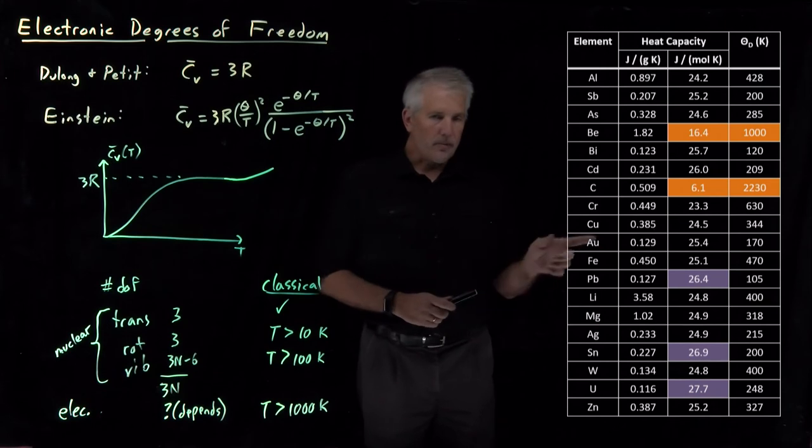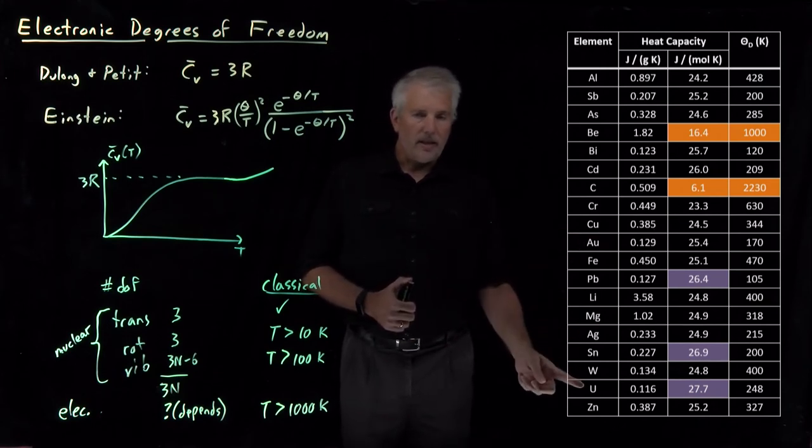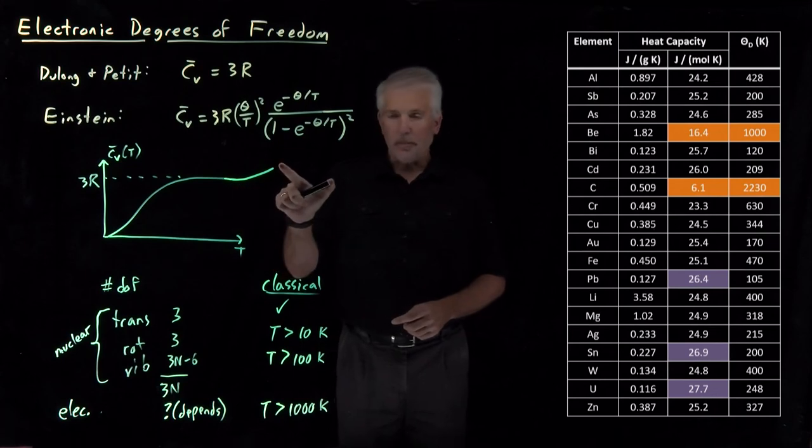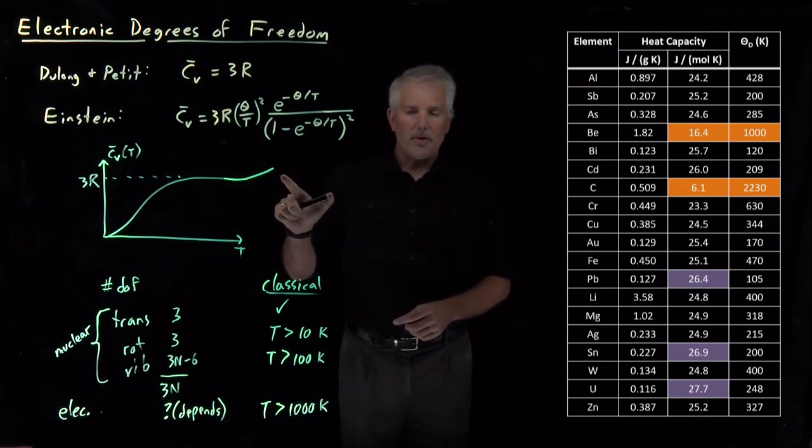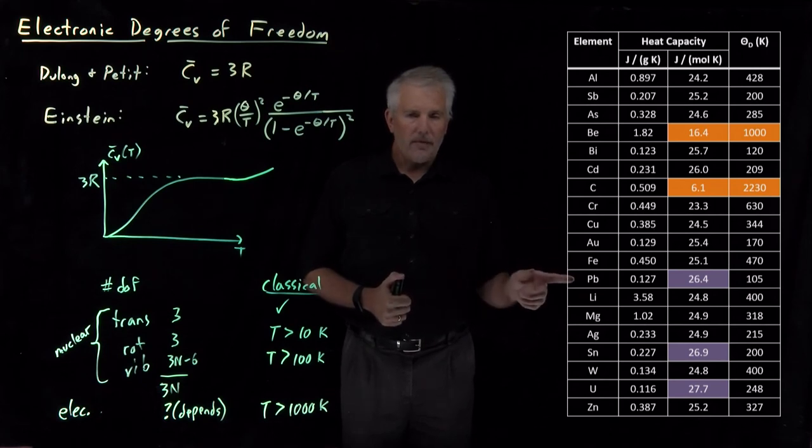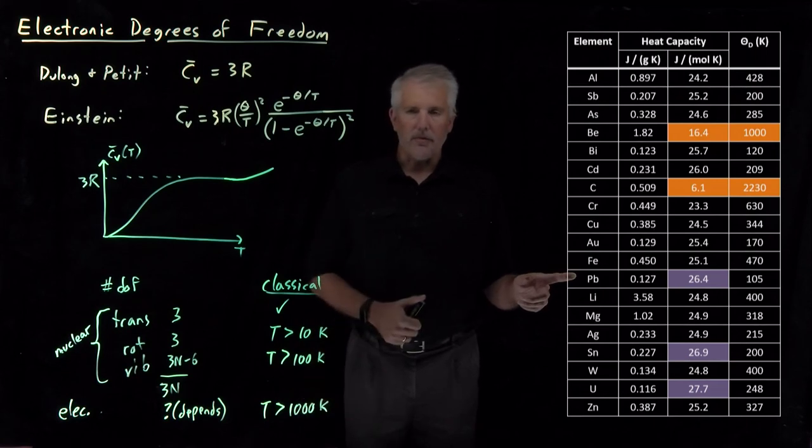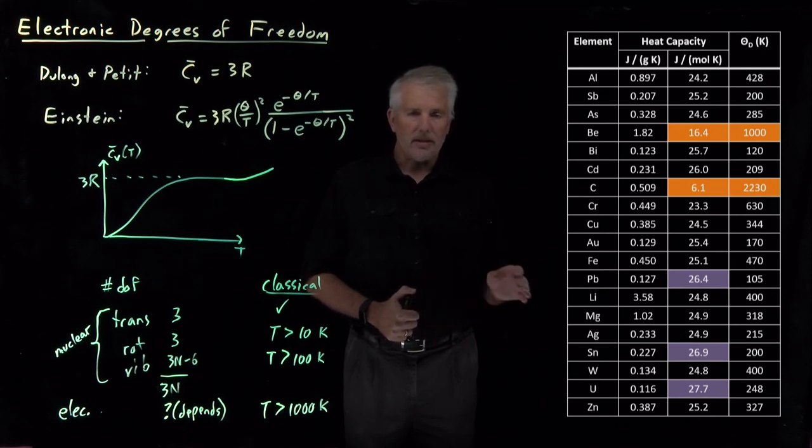But what we can tell from the data is for the materials like lead and tin and uranium that have started this rise up above 3R down at temperatures like room temperature. What that means is they have anomalously low-lying electronic states that don't require us to heat up to a thousand Kelvin or more to begin to excite them. But lead and tin and uranium have some electronic states that are accessible even at temperatures of 300 Kelvin.